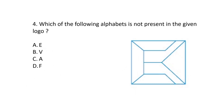Question number 4. Which of the following alphabets is not present in the given logo? Option A: E, Option B: V, Option C: A, Option D: F. We can see E here, and F is also present — this is F. V is clearly visible here. But A is not here. So, the answer is Option C.